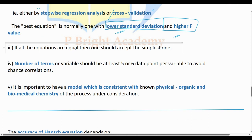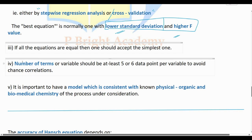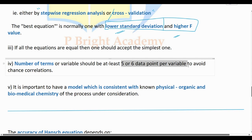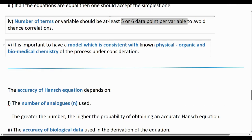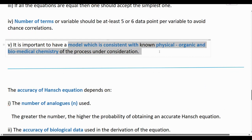The deviations should be minimum, and the parameters should be included appropriately. The number of variables should have at least 5 or 6 data points. It is important to have a model which is consistent with the known physical, organic, and biomedical chemistry of the process under consideration.